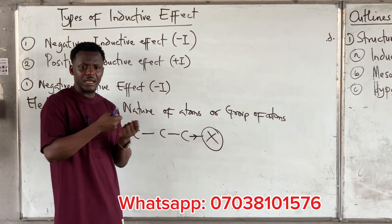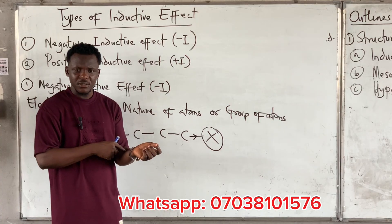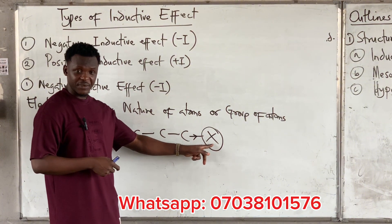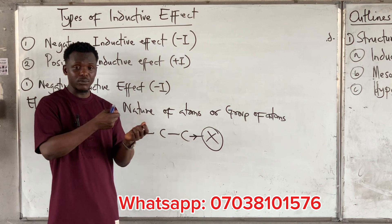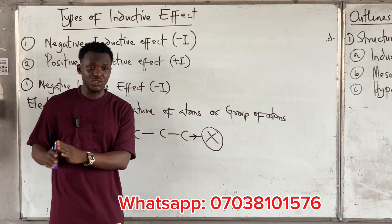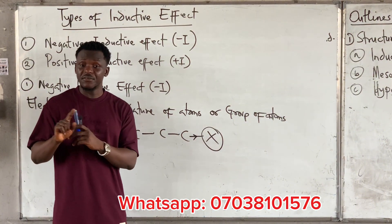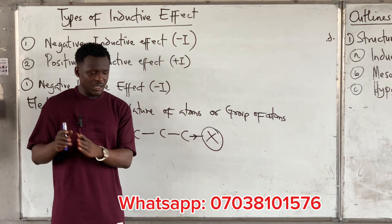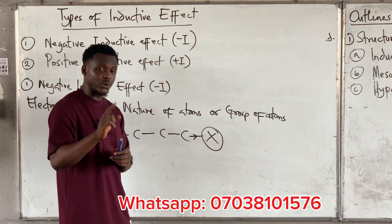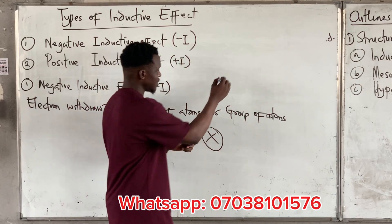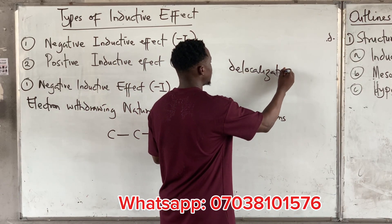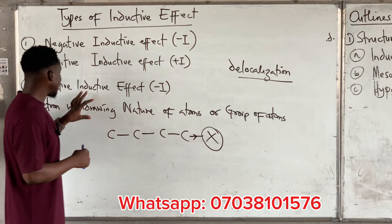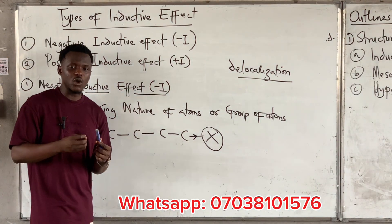When some group is withdrawing electrons from a compound, there must be a mechanism — a process it uses. In the case of inductive effects, for an atom or group of atoms to withdraw electrons from a compound, it is done via polarization. When we get to mesomeric effect — which also has minus M and plus M — the only difference is their mode of operation. Inductive effect withdraws by polarization, while mesomeric withdraws by delocalization.